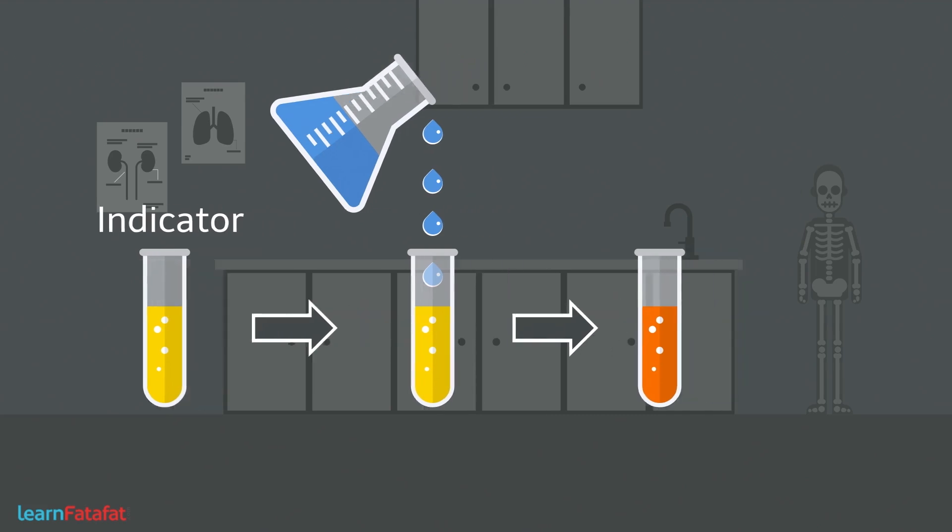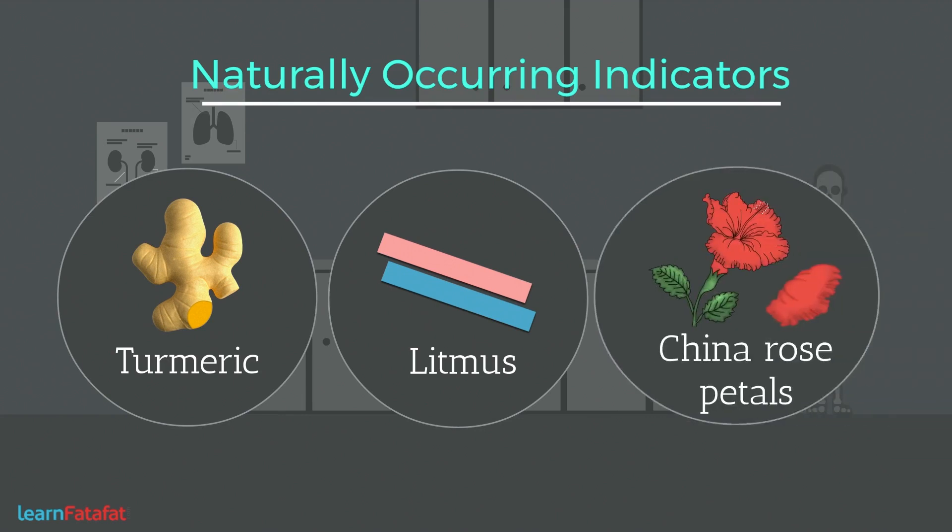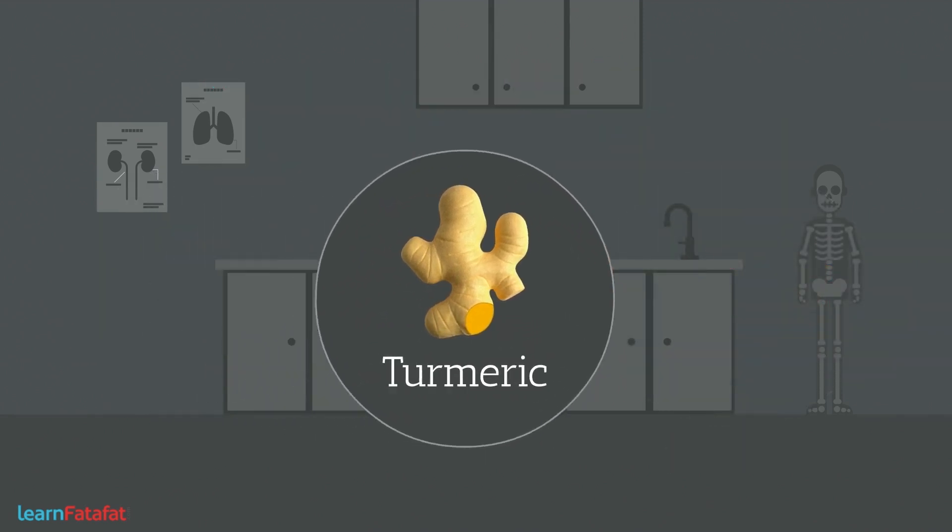Some of the naturally occurring indicators are turmeric, litmus, china rose petals also called hibiscus, etc. Let's learn how we can use turmeric as an indicator.